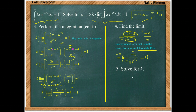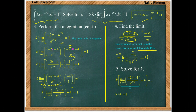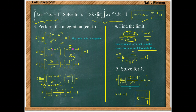We were finding the k that makes the integral equal to 1. The limit contributed 0, and the lower limit gave 4, so we have 4k equals 1, meaning k equals one-fourth. When k equals one-fourth, the function satisfies both PDF properties: it is non-negative and has a total area equal to 1.